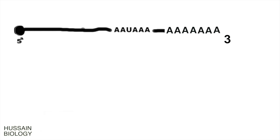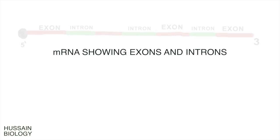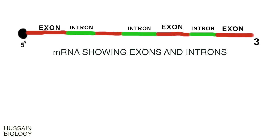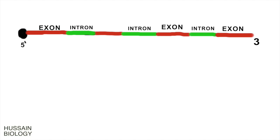Furthermore, the mRNA molecule is processed by RNA splicing. The mRNA molecule now has a 5' cap and has also gone through polyadenylation at the 3' end. The next event is RNA splicing. There are different sequences in the mRNA molecule — exons and introns, as shown in the diagram. The exons are kept and introns are removed, since introns are non-coding sequences whereas exons are coding sequences. So before translation, we have to remove these introns, and this is done by RNA splicing.